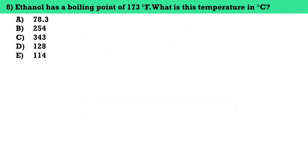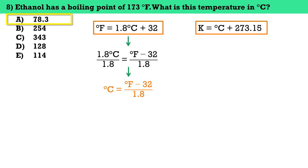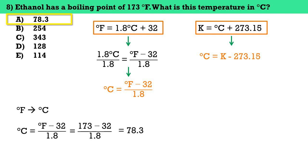Number eight, ethanol has a boiling point of 173 degrees Fahrenheit. What is this temperature in degrees Celsius? The answer here is letter A, 78.3. To convert degrees Fahrenheit to degrees Celsius, derive the formula: degrees Celsius equals degrees Fahrenheit minus 32, over 1.8. Substituting 173 degrees Fahrenheit, the answer is 78.3 degrees Celsius.